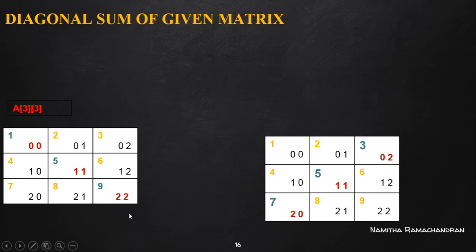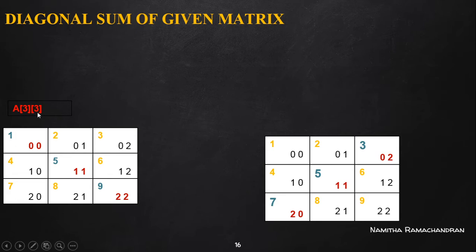Here we have matrix A with row size equal to 3 and column size equal to 3. Both are equal, so the given matrix is a square matrix. We can calculate the diagonal sum here because the diagonal exists for this given matrix A since it is a square matrix.